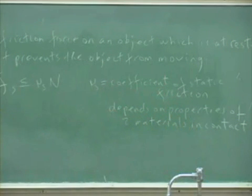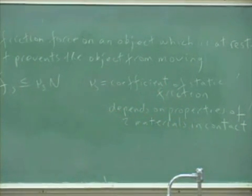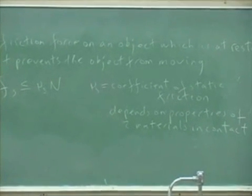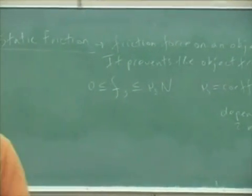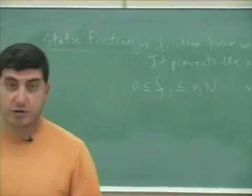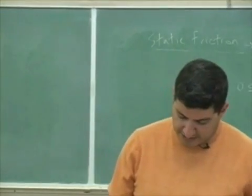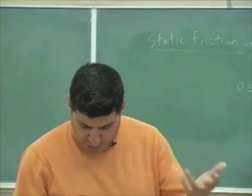Your book should have a table. You can take a look at it. The table is going to give you a certain table of static friction coefficients. It gives you rubber on concrete, steel on steel, aluminum on steel, glass on glass, and so on.